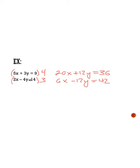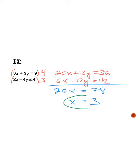We can go ahead and add them together to get our y values to cancel. When you do, you get 26x is equal to 78. Then if you divide both sides by 26, we end up getting x is equal to 3. Now that we know what x is, I can take that x value and plug it into one of my original equations — I'm going to plug it into my second equation. We end up getting 6 minus 4y is equal to 14. If I subtract 6 on both sides, we get negative 4y is equal to 8, and dividing by negative 4, we get y is equal to negative 2.